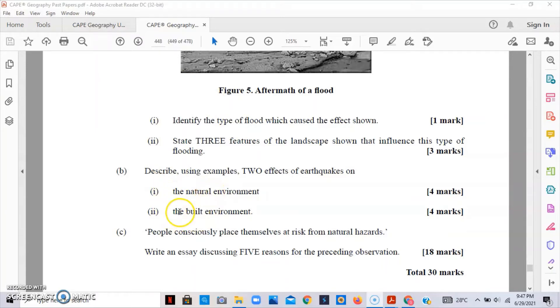For the built environment, the effects are that the earthquake can cause the collapse of buildings, damage to the communication and transport infrastructures, and cause dams to fail. Once you're able to describe two of these examples about the built or human environment, you should be able to get your four marks.